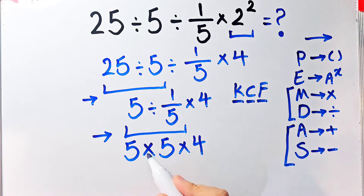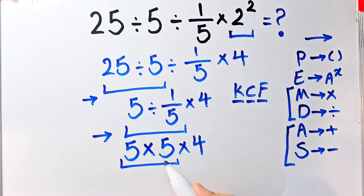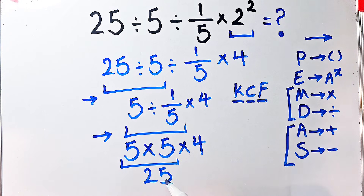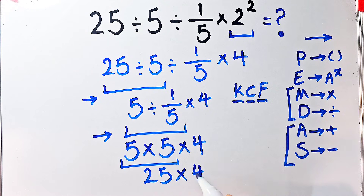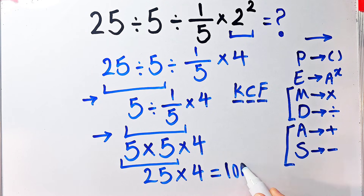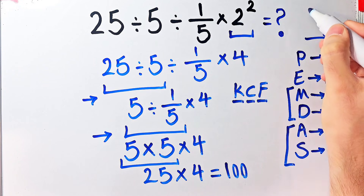5 times 5 equals 25. Now we have 25 times 4, and 25 times 4 equals 100. The final answer of this question equals 100.